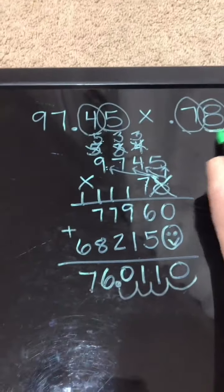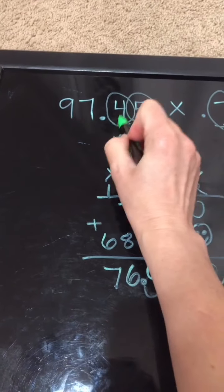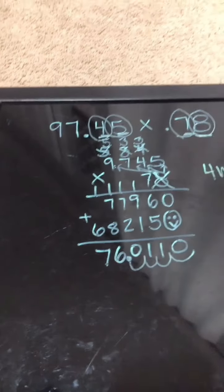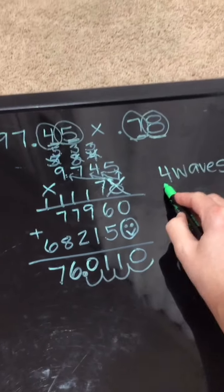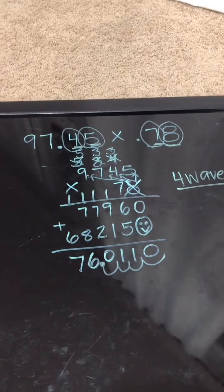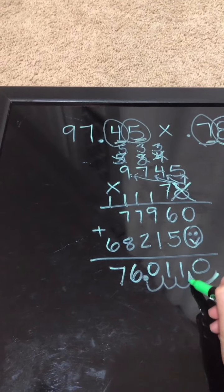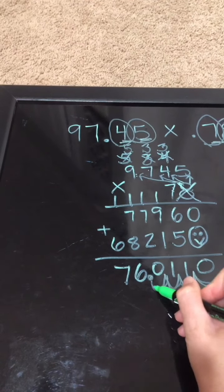Again, I have 4 numbers in the entire problem that are after the decimal. So that tells me to do 4 waves and I jump 1, 2, 3, 4.